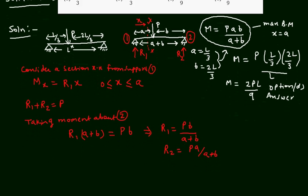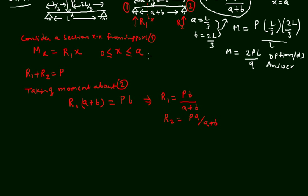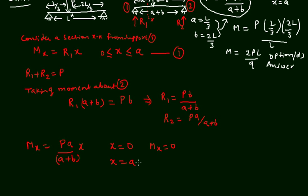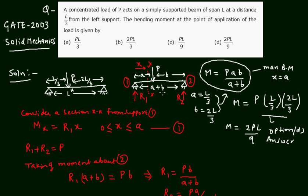From this equation, the bending moment is Mx = [Pb/(a+b)]·x, valid for 0 ≤ x ≤ a. At x = 0 (left support), Mx = 0. At x = a, the bending moment is M = Pab/(a+b), which matches the formula we used.